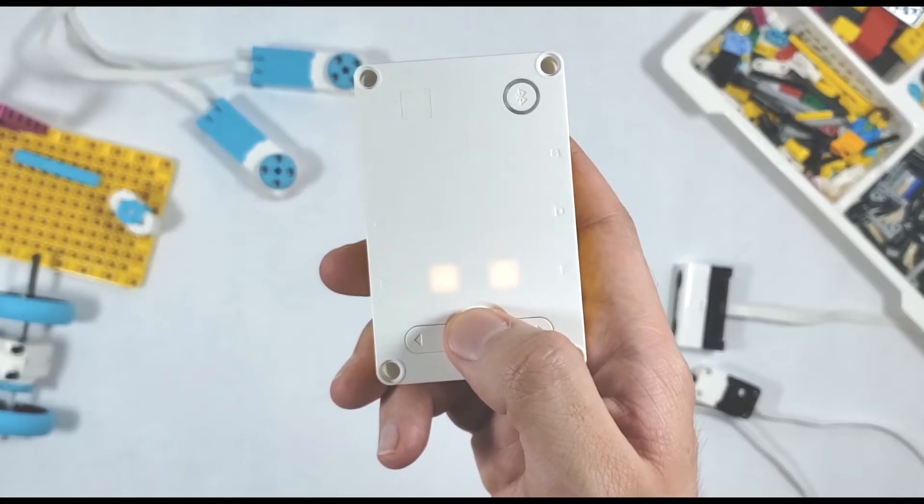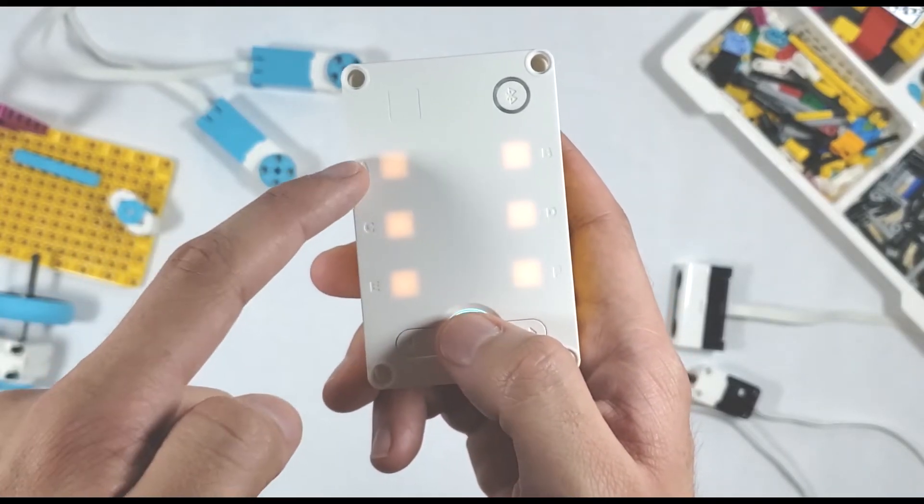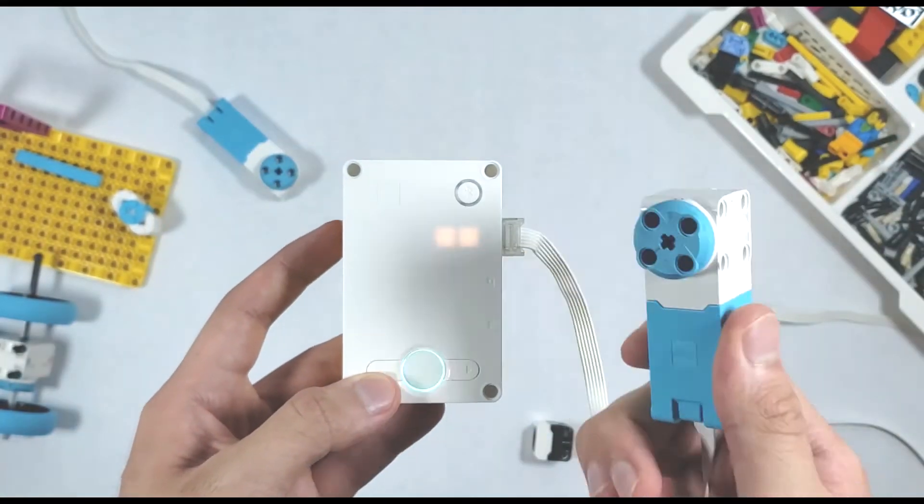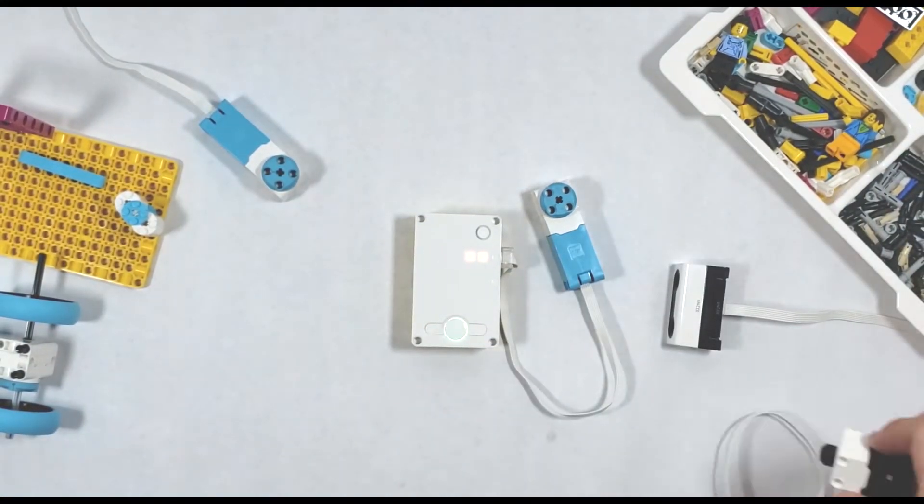When you click into it, you'll notice that each one of the ports on the hub is lit up, and when you plug something in, whether it's a motor or a sensor, there's a little bit more movement going on on the display.